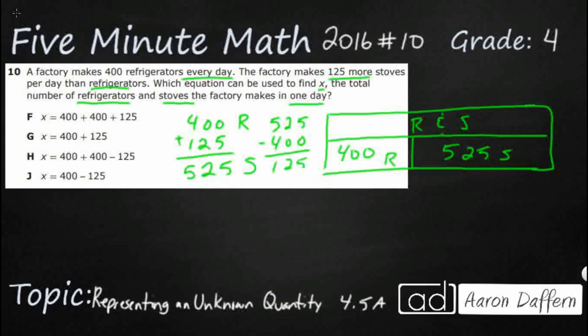So it looks like I just add these two up and I've got my 400 and I've got my 525. And I'm going to get my, there we go. No regrouping needed. I've got 925 refrigerators and stoves a day.